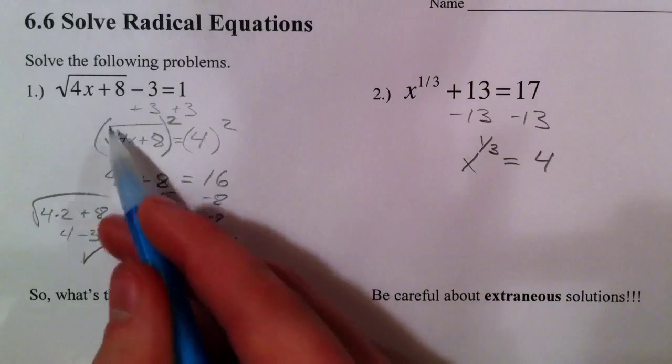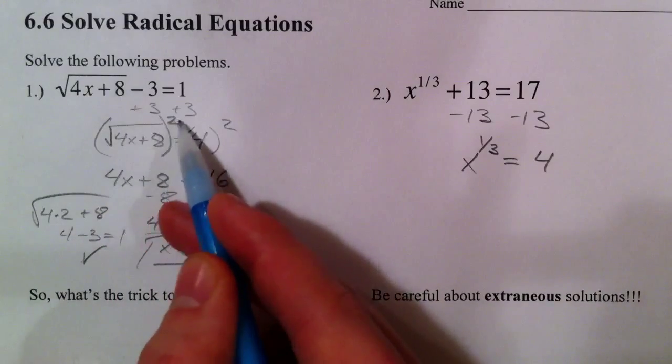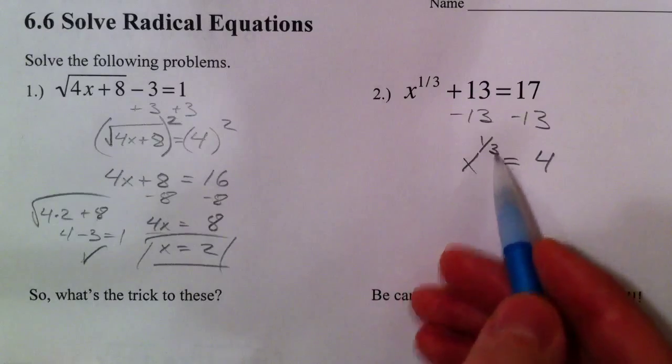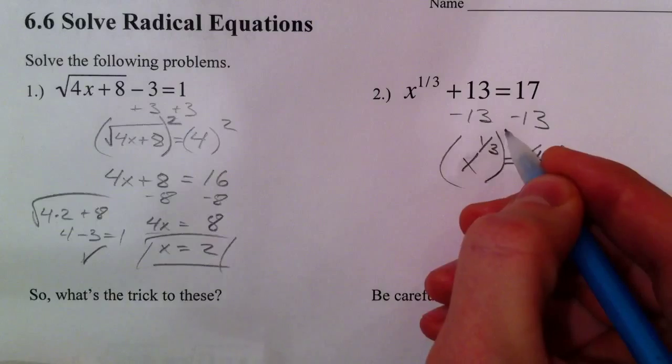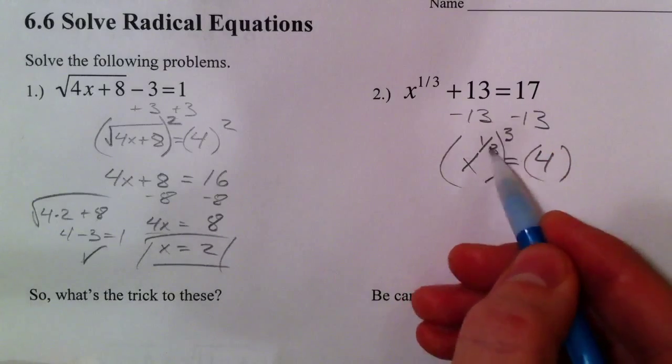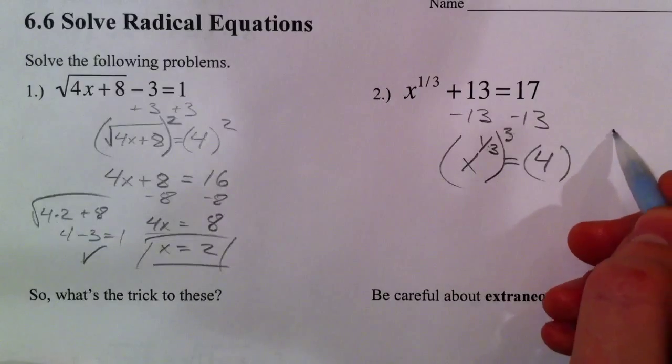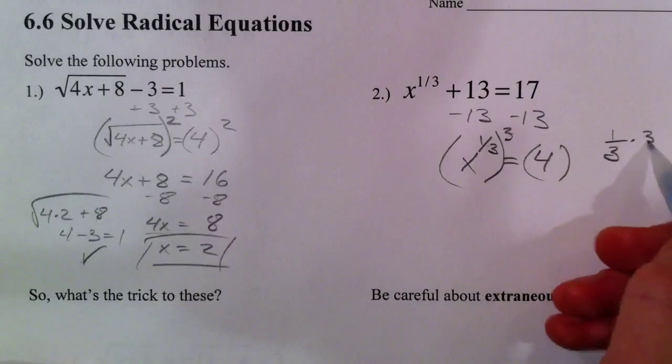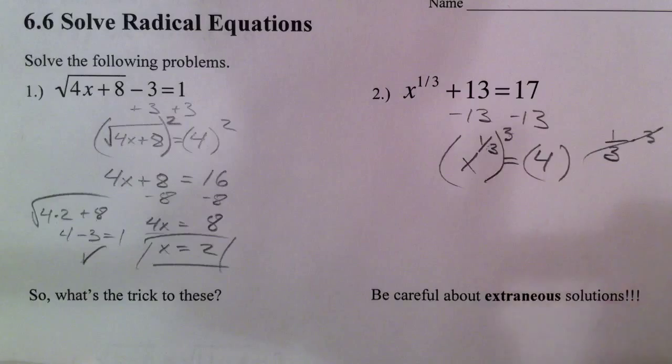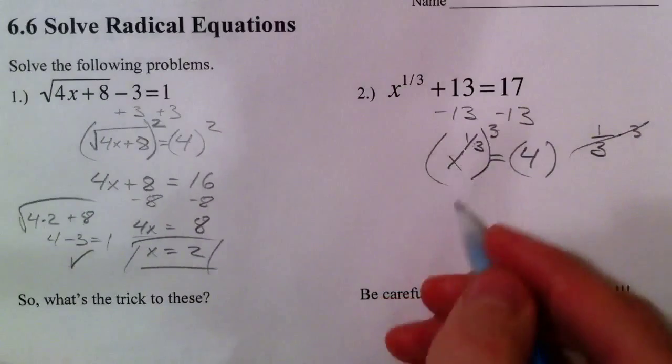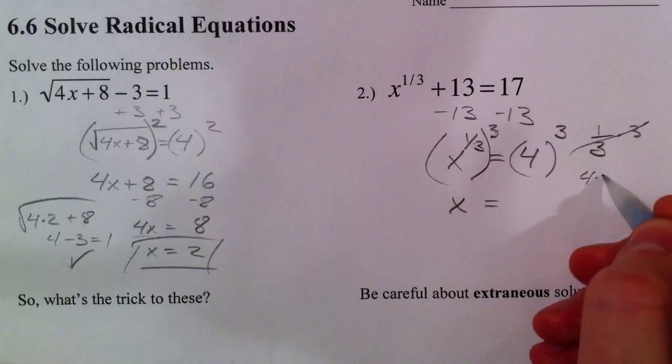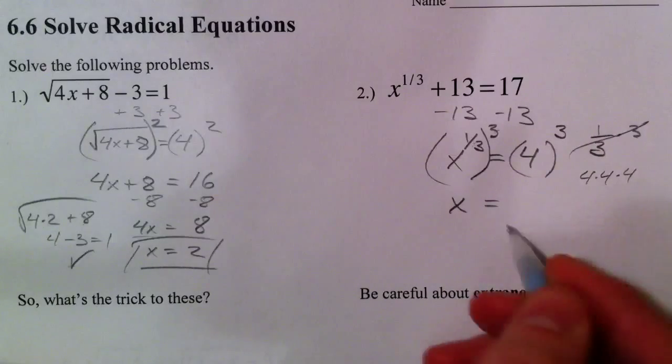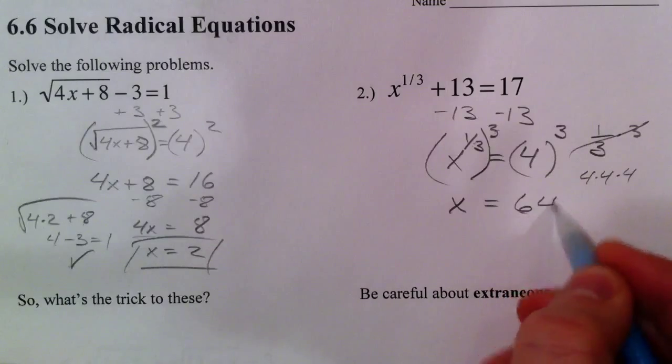Well, to undo the squared power, the square root, we squared both sides. Undo a 1 third power, raise it to its reciprocal, because then these exponents are going to multiply 1 third times 3. Anything times its reciprocal is going to be 1. So we're going to get x to the 1st power equals 4 to the 3rd power, and 4 times 4 is 16 times 4 is 64.